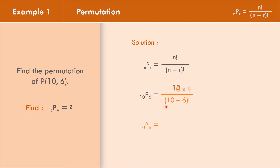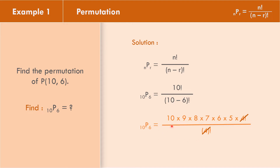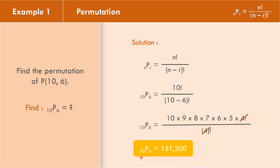10 minus 6 equals 4 factorial in the denominator. The 10 factorial in factored form is 10 times 9 times 8 times 7 times 6 times 5, written up to 4 factorial only to cancel the 4 factorial in the denominator. Canceling 4 factorial, we multiply: 10 times 9 is 90, times 8 is 720, times 7 is 5,040, times 6 is 30,240. Then P(10, 6) equals 151,200.